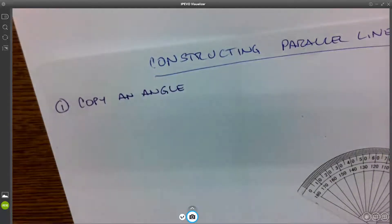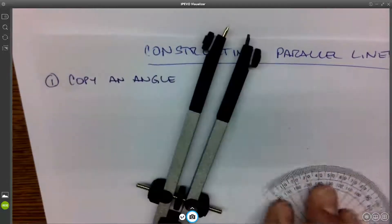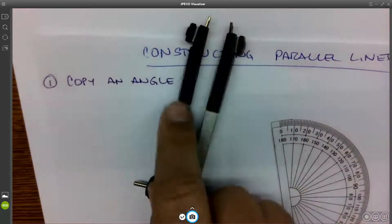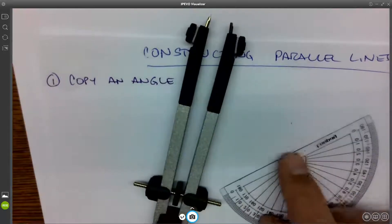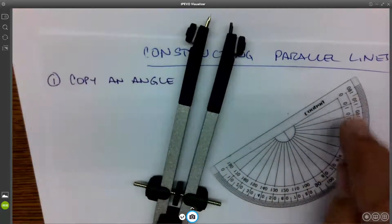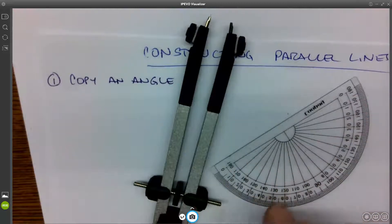So we're doing constructions. Constructing parallel lines. Constructions involve only two tools. They involve a compass and a straight edge. I'm using my protractor here as a straight edge. I won't be using any of the markings on it, just the straight component.